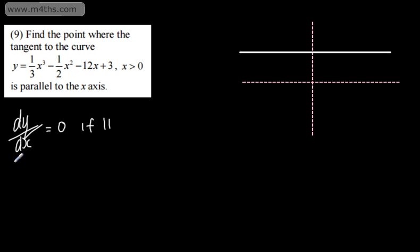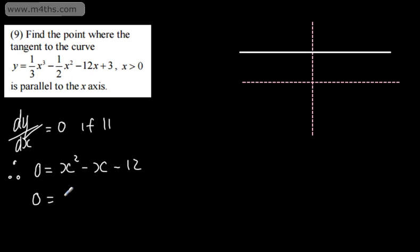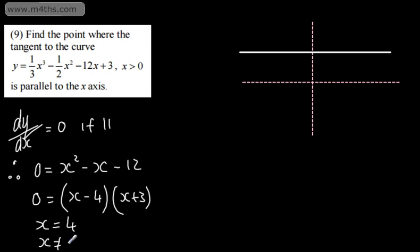So all I'm going to do is write: 0 is equal to — differentiating, multiplying down by the power — that's going to give me x squared minus x minus 12 equals 0. That factors as x minus 4 times x plus 3 equals 0. So x is equal to 4, or x equals negative 3. But this is only defined for x greater than 0, so x cannot equal negative 3.